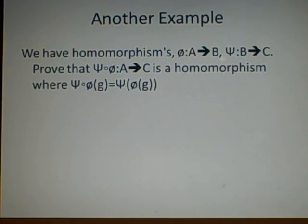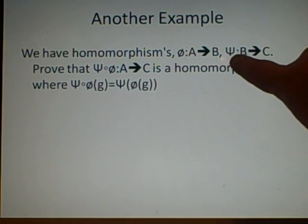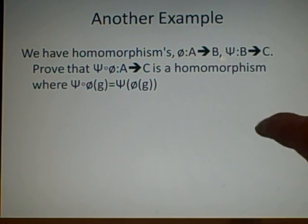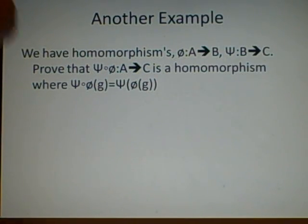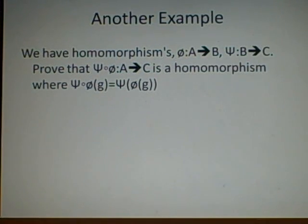And another example, which is our final one, we've got two homomorphisms, phi from a to b, and I can't remember what that's called, we'll call it sigma, from b to c. We want to prove that if we combine them, that this is a homomorphism.